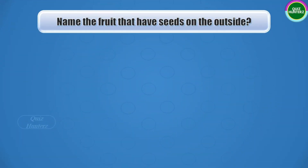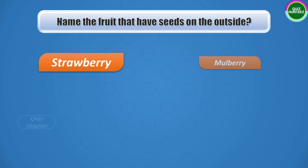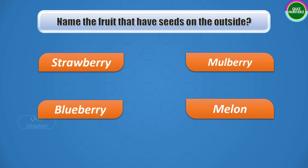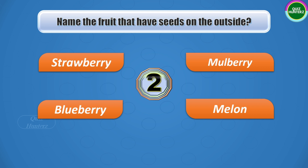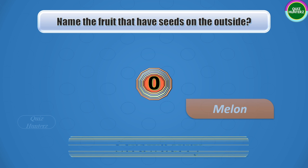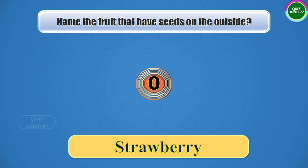Question number one: name the fruit that has seeds on the outside. Options are strawberry, mulberry, blueberry, or melon. Your time starts now. And the correct answer is strawberry.